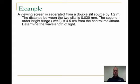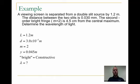First, a viewing screen is separated from a double slit source by 1.2 meters. If the distance between the two slits is 0.03 millimeters, and the second order bright fringe is 4 and a half centimeters from the central maximum, determine the wavelength. I'm given l, I'm given d, which is the separation between the two slits. m is 2, it's the second order bright fringe. The y, which if you remember, is the distance of the bright fringes from the central maximum.